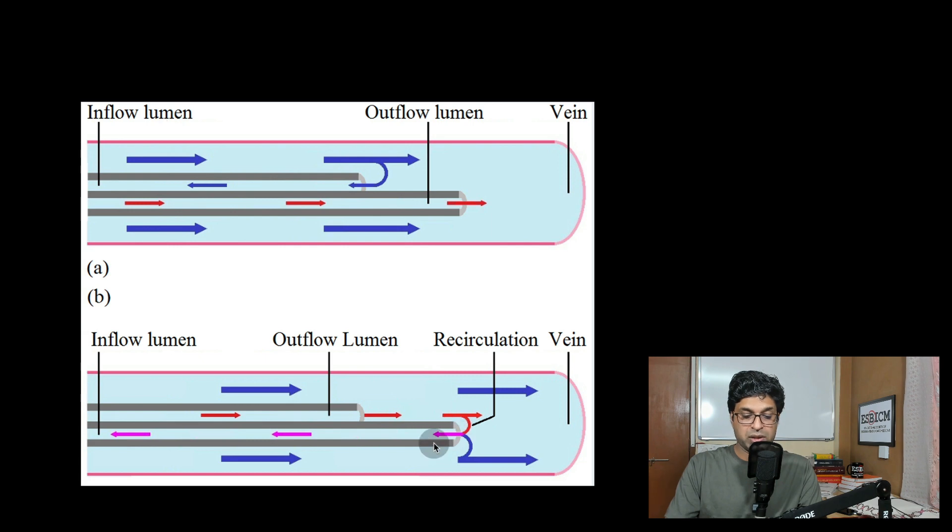And now this partially cleared blood will go here and then will come in this direction. It creates a loop which is called recirculation. So now you can see that when you switch the ports...